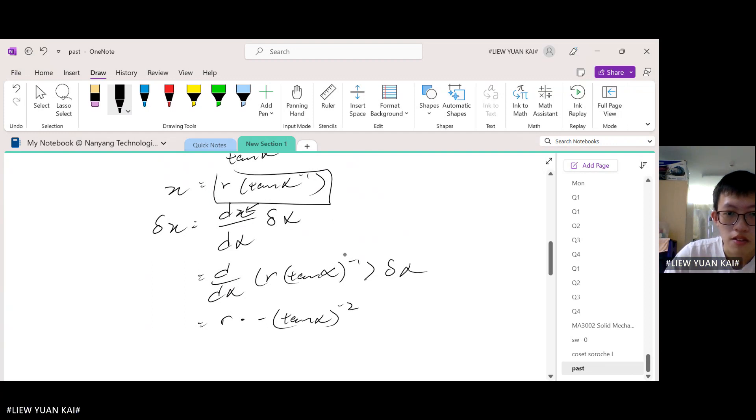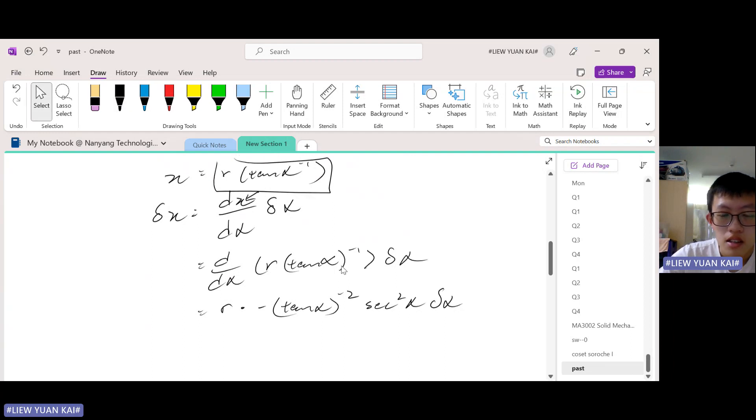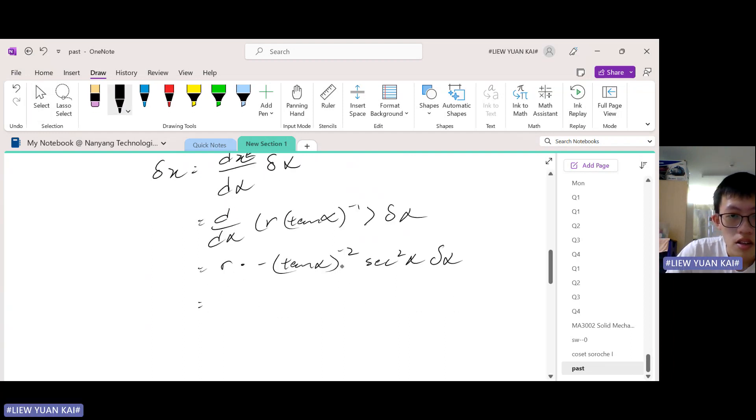I can bring R out. Now I differentiate this. So power bring down, power minus one, differentiation of the inside. So the differentiation of tangent is secant squared, δα. So I think from here I'll just simplify it, I guess. So negative R secant squared α over tangent squared α.